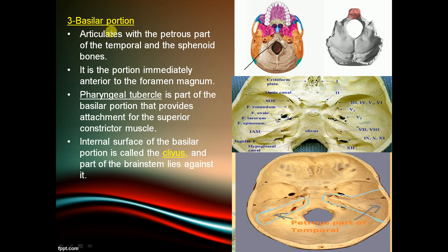The basilar portion of the occipital bone articulates with the petrous part of the temporal and sphenoid bone. It is immediately anterior to the foramen magnum. The pharyngeal tubercle is part of the basilar portion and provides attachment for the superior constrictor muscle. The internal surface of the basilar portion is known as the clivus, and the brainstem lies against it.